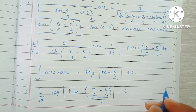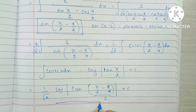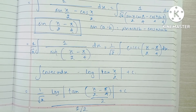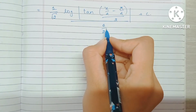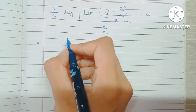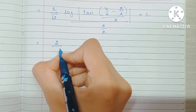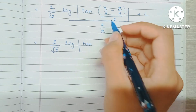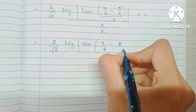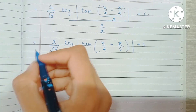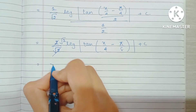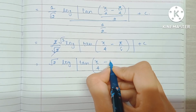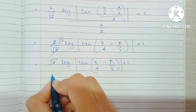Don't forget that we must put the coefficient of x in the denominator. The coefficient of x is 1/2, so bringing 1/2 from the denominator into the numerator gives us 2. We then have (2/√2) log|tan(x/4 minus π/8)| plus c. Since 2/√2 simplifies to √2, our final answer is √2 log|tan(x/4 minus π/8)| + c.